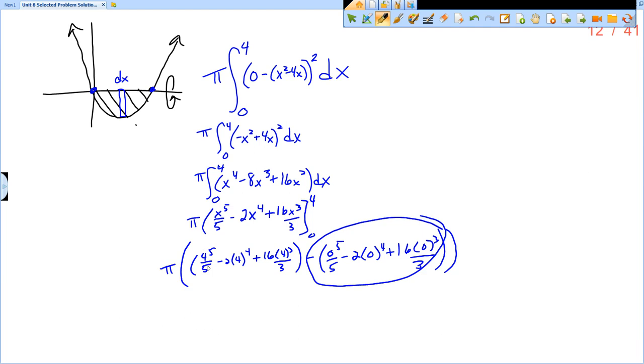But now I have a four to the fifth over five. So remember four to the fifth power would mean four times four, so 16 times another four, which is 64 times another four, which is 256 times another four, which is 1024 fifths.